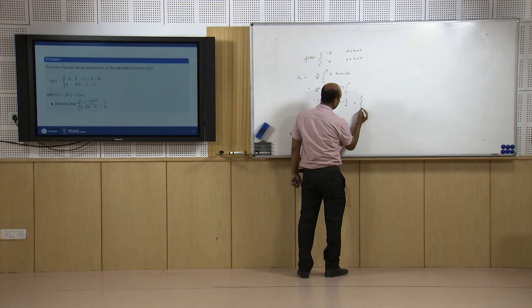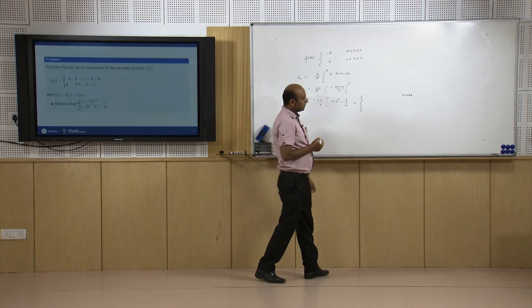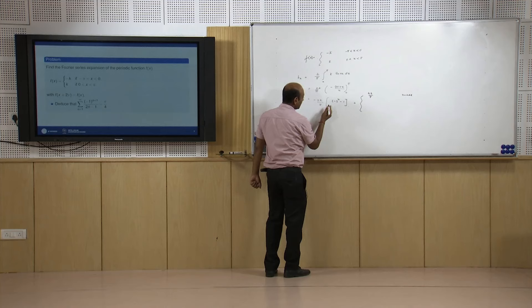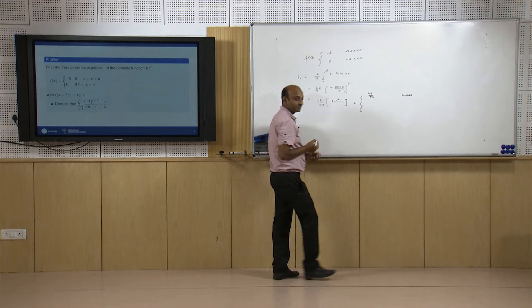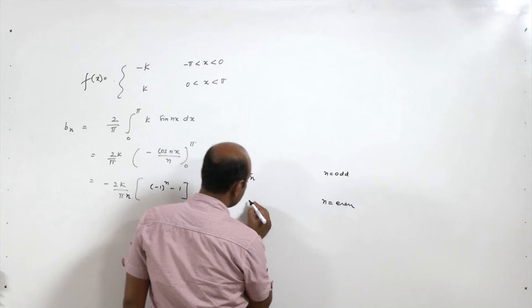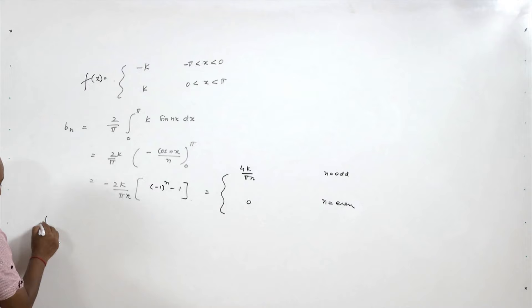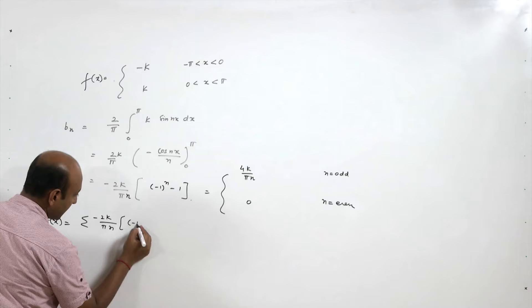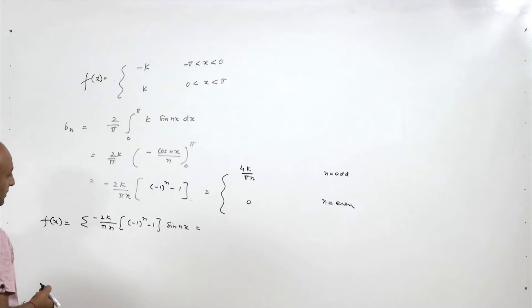When n is odd: bₙ = 4k/(nπ). When n is even: bₙ = 0. So the Fourier series is: f(x) = Σ bₙ sin(nx) = (4k/π)[sin(x)/1 + sin(3x)/3 + sin(5x)/5 + …], since only odd n contribute.